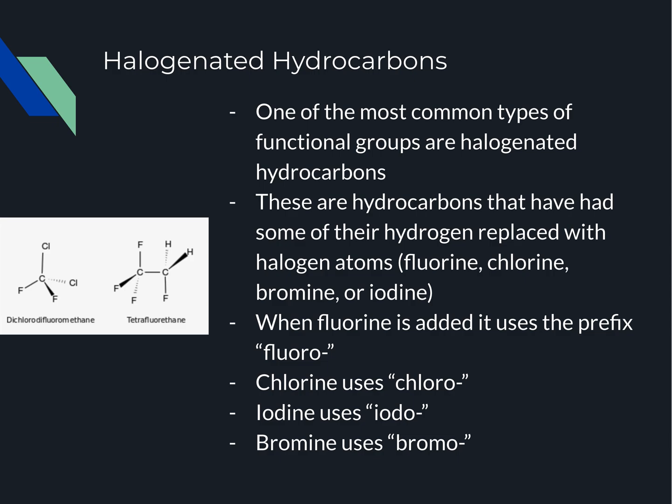On our left-hand side we have dichlorodifluoromethane. The reason it's a methane is it has one carbon, so we're using methane as the base, and then we've switched out the hydrogens for two chlorines — dichloro — and two fluorines — difluoro. We also have a tetrafluoroethane variant: 1,1,1,2-tetrafluoroethane, because we've swapped all three hydrogens on the first carbon for fluorine, and one hydrogen on the second carbon for fluorine as well.